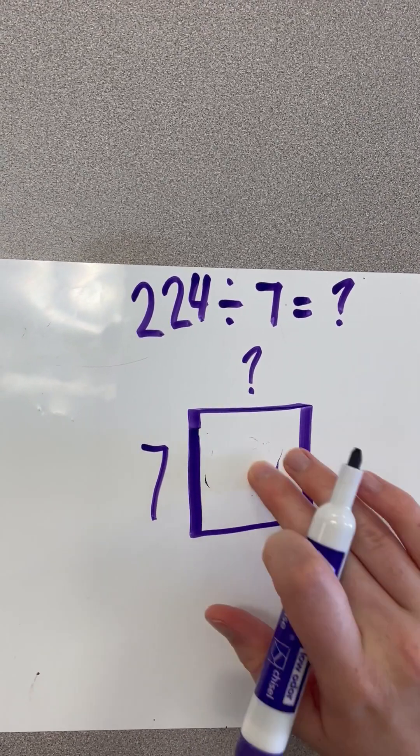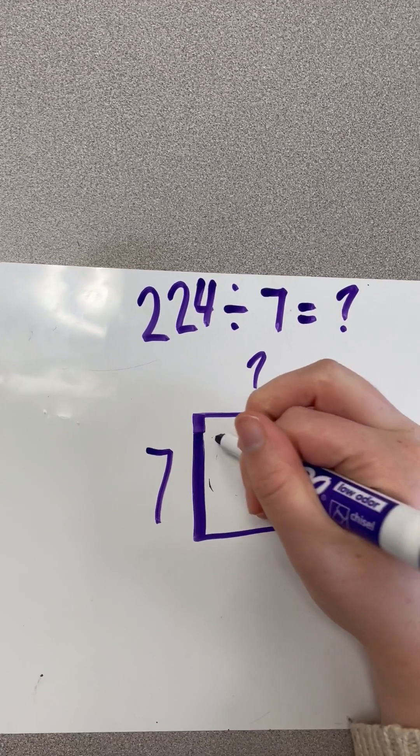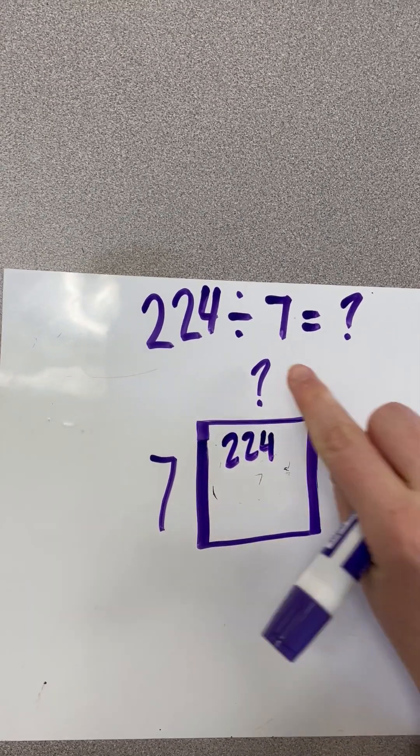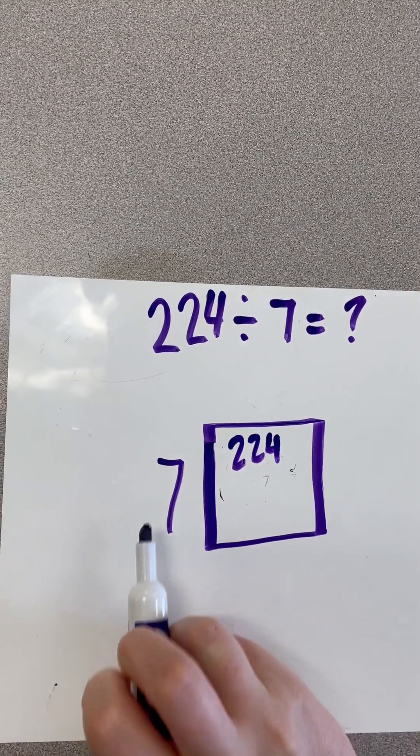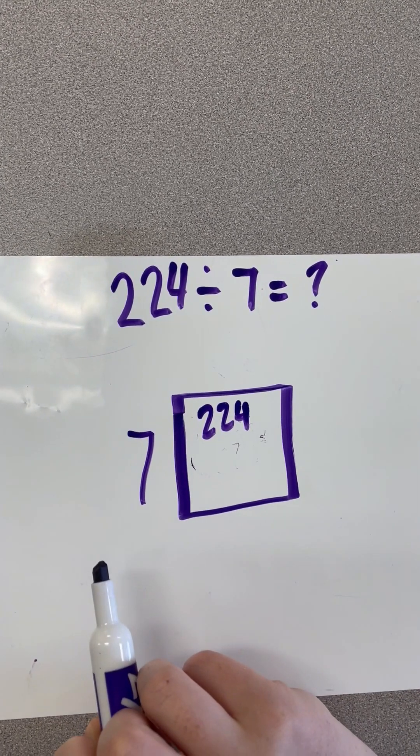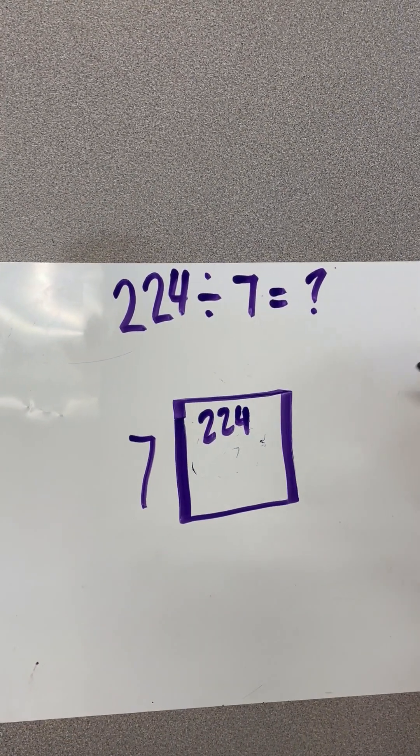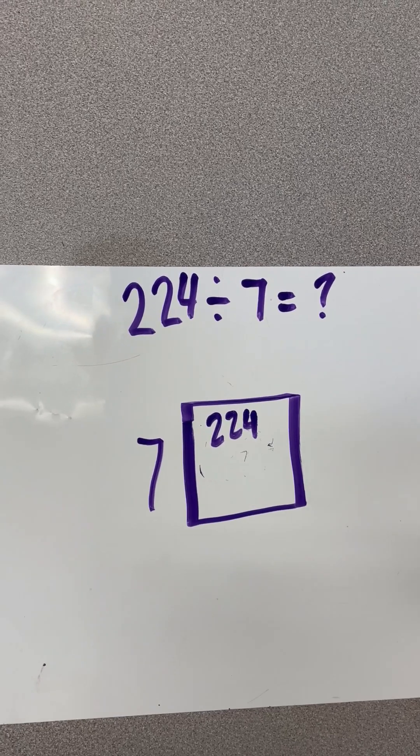So when we start with our division problem, I'm going to go ahead and make this a little bit smaller. We want to ask ourselves, how many times can 7 go into 224? And we're going to break it up just a little bit. So we don't have to do that huge number.